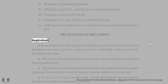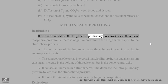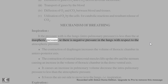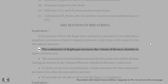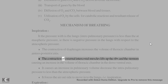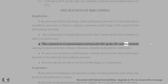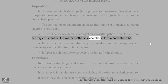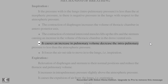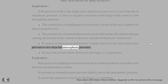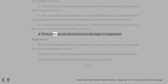Mechanism of breathing — Inspiration: When the pressure within the lungs (intrapulmonary pressure) is less than the atmospheric pressure, i.e., there is negative pressure in the lungs. The contraction of the diaphragm increases the volume of the thoracic chamber in the anteroposterior axis. The contraction of external intercostal muscles lifts up the ribs and sternum, increasing thoracic volume in the dorso-ventral axis. This decreases intrapulmonary pressure below atmospheric pressure, forcing air into the lungs — inspiration.